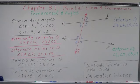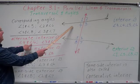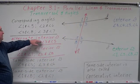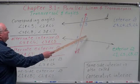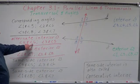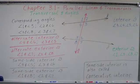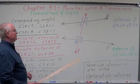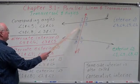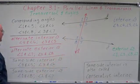Alternate interior angles: angles 4 and 6, and angles 3 and 5. One is on the left side of the transversal and the other on the right side, but both are interior — one up next to one line, one up next to the other. Alternate exterior angles are the same concept but external: angles 1 and 7, and angles 2 and 8.